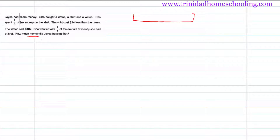In questions like these dealing with fractions, we must remember that fractions are part of a whole, so we need to identify what the whole amount is. The whole amount we want to find is money. So let's draw a whole bar to represent this money — this bar represents all the money that she has.